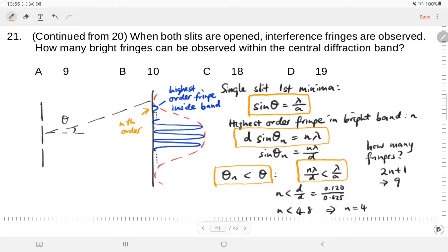Because n must be in integers - they are discrete fringes - it's the fourth order one that we can see. So how many fringes can you see in total? You have four orders on each side, so times two gives you eight, plus the zero order interference fringe, so altogether nine. The answer is A.